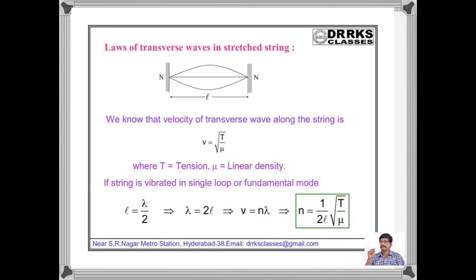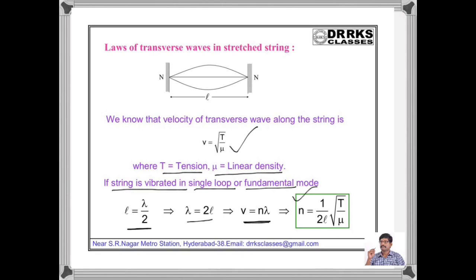The next very important topic is transverse waves in a stretched string. The velocity of a transverse wave along the string is v = √(T/μ), where T is the tension in the string and μ is the linear density. If the string is vibrating in a single loop or fundamental mode, the distance between two successive nodes equals λ/2, which equals the length of the string. So λ = 2l, and using v = nλ, the fundamental frequency is n = (1/2l)√(T/μ). This is a very important equation.